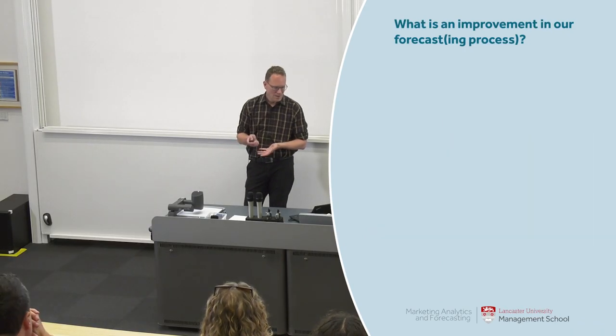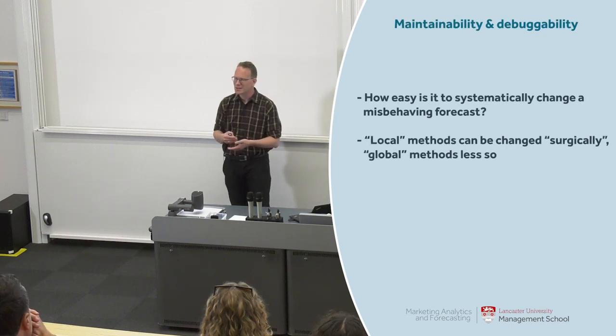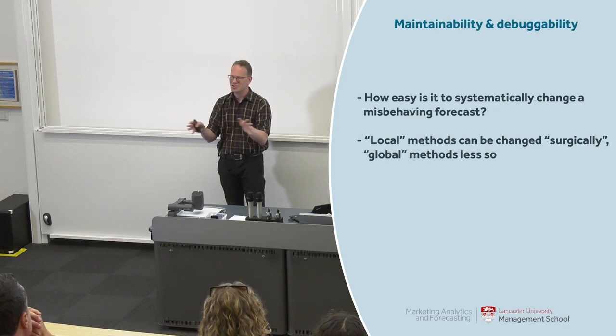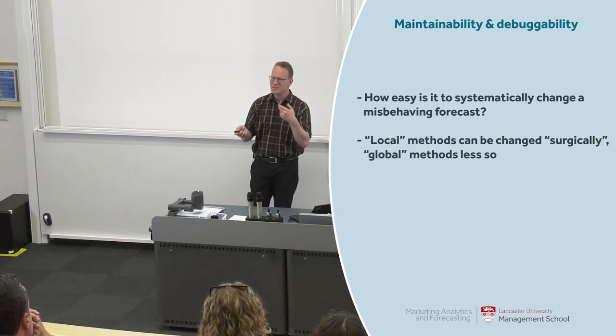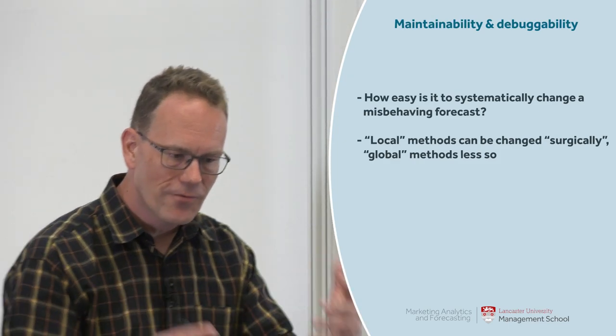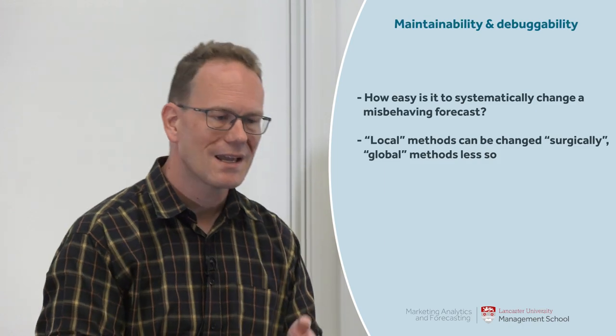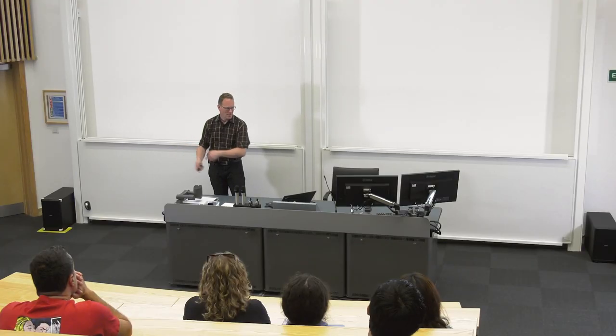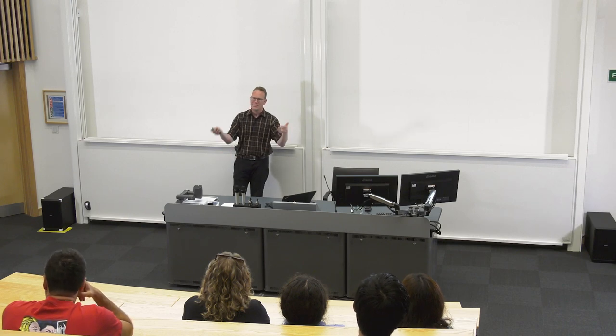That leads to maintainability and debuggability: how easy is it to systematically change a forecast? We can always overwrite a forecast — that's judgmental adjustment. The question is, if something is systematically wrong — it always forecasts poorly in one particular situation — can we change that without breaking stuff elsewhere? With local methods like exponential smoothing or ARIMA, you can work surgically and change one time series with reasonable confidence it won't break others. But with global methods like boosting or deep learning, you change something here and stuff breaks over there.